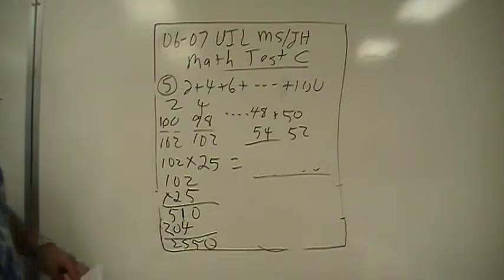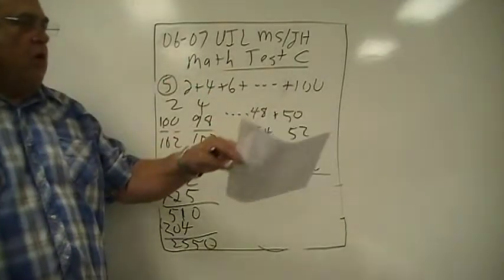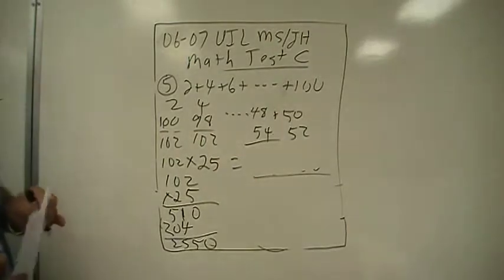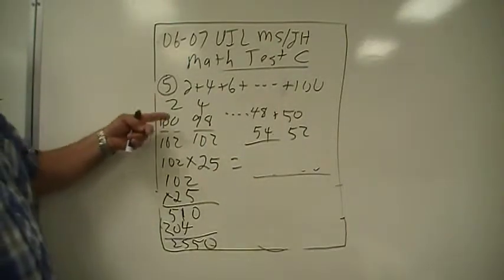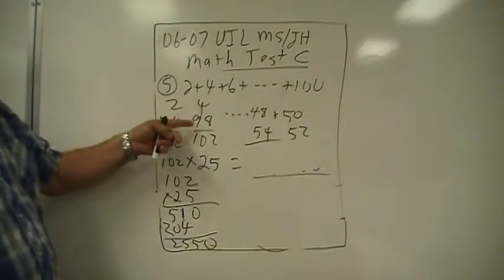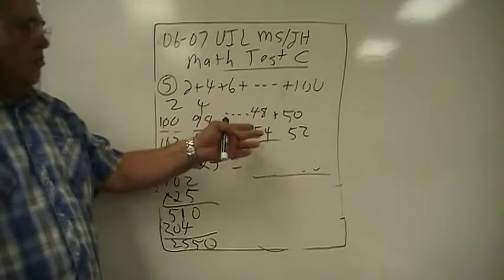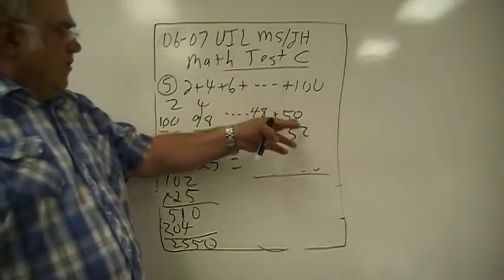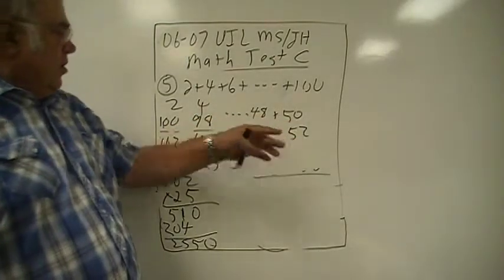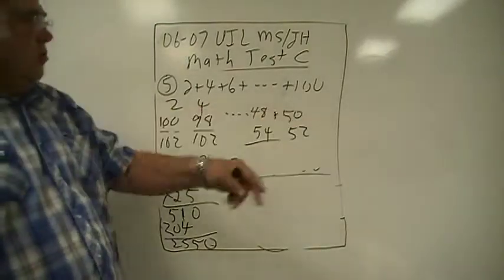Number five. You get the even numbers from two to one hundred, so if you put them in this order — two and one hundred, four and ninety-eight — and you skip these others, you get fifty, that'd be fifty-two. These all add up to one-oh-two.